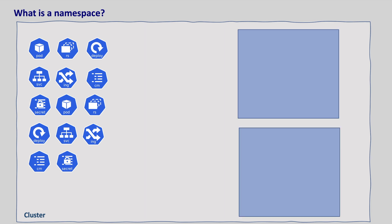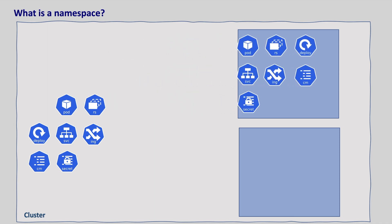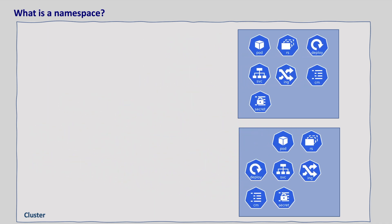So far we have created pods, replicasets, deployments, services and ingress, and we will be creating many other resources like config maps, secrets, etc. We will also be creating Kubernetes resources for multiple applications in the same cluster. When we have multiple resources of multiple applications, there should be a way to organize them. This organizing can be done with namespaces. Namespaces are a way to organize clusters into virtual sub-clusters, so we will be creating our resources in these namespaces instead of creating them all in one namespace.